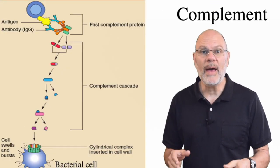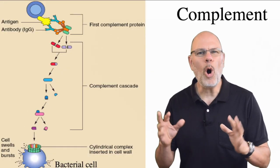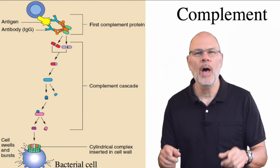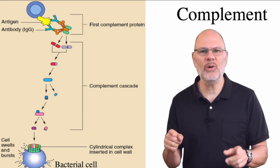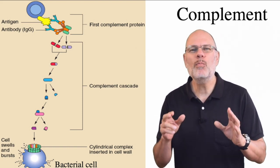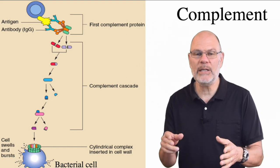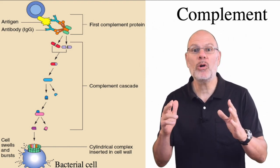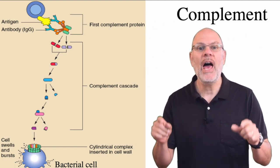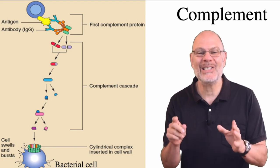Complement is a family of proteins that can work on their own to inhibit bacterial growth by blowing holes in bacterial cell walls. They're even more effective when they work with antibodies — a part of the specific immune response — and we'll learn about that in the next video.